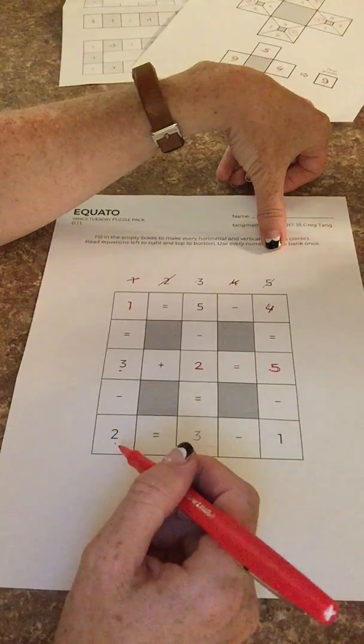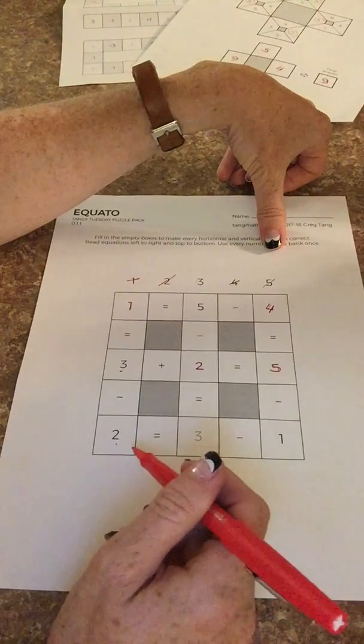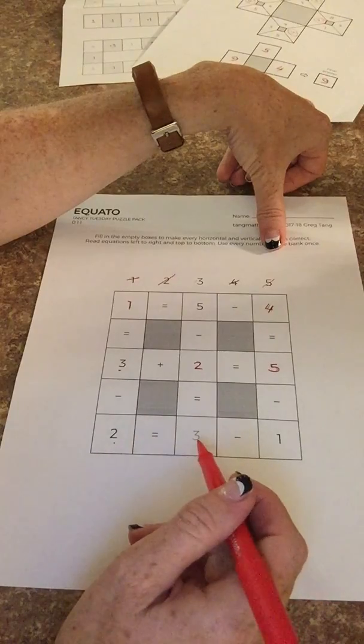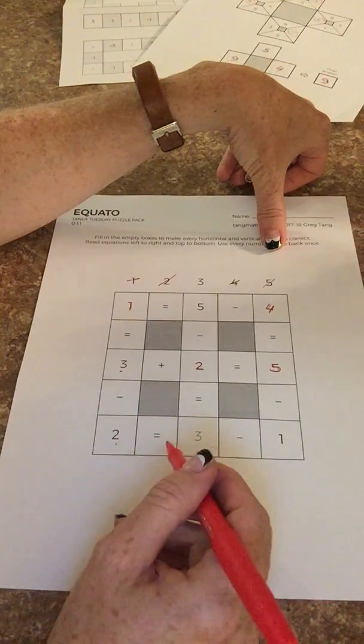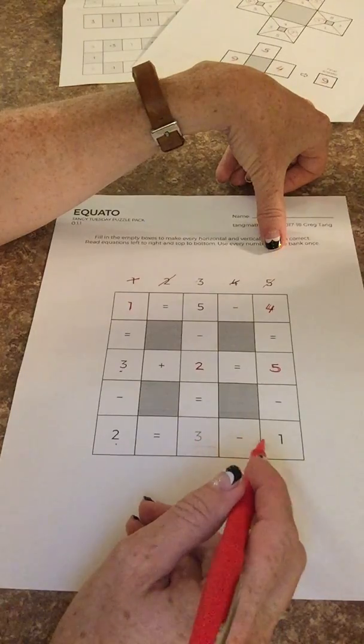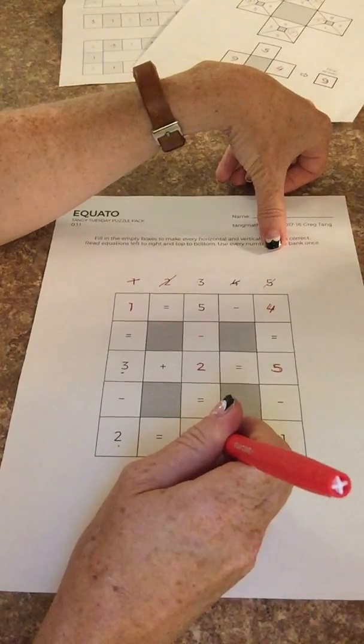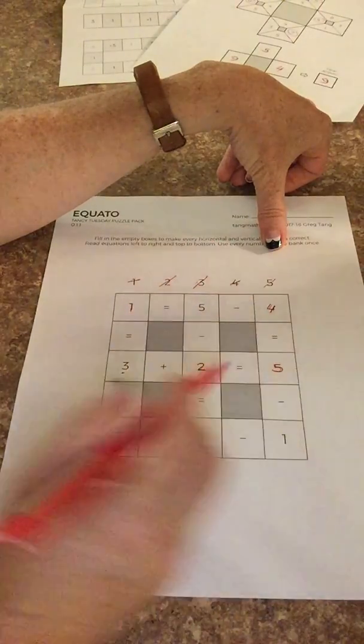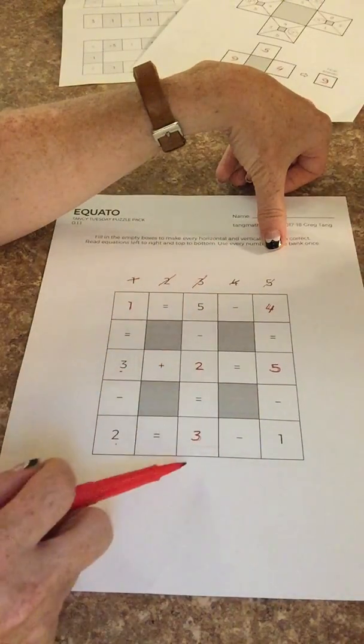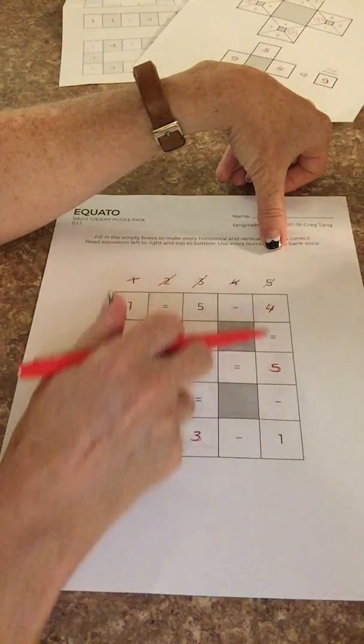So two equals what number minus one, so three minus one equals two, so that would make sense. And we can check our other equations: five minus two is three, we can double check everything. So that one worked out great. The first grade one that I'm showing you here is a tad easier.